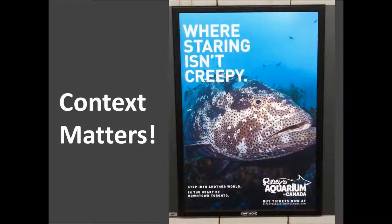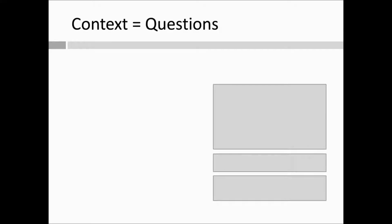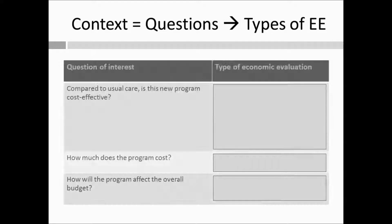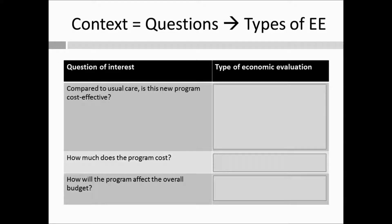The point of all this is: staring in one context is not a good thing, but staring in another is something people recommend you do. The point here is that context matters. Linking this back to economic evaluation — in economic evaluation, the question that you have sets the context. Everything always goes back to: what is the question you want to know? Depending on your question, we do different types of economic evaluation.